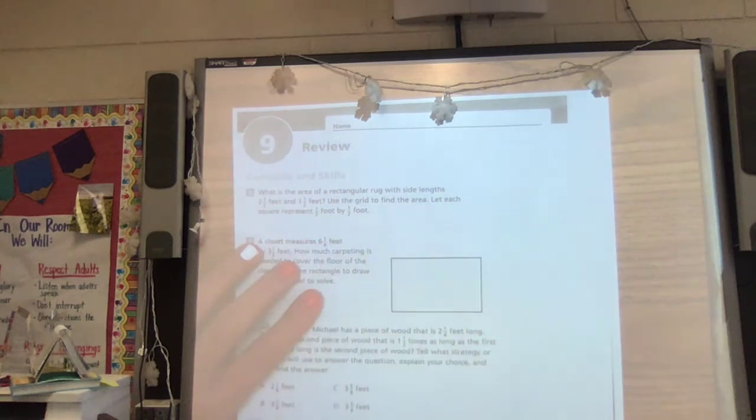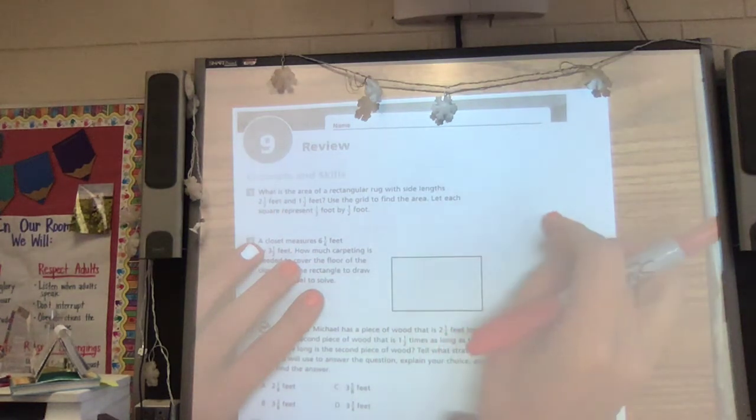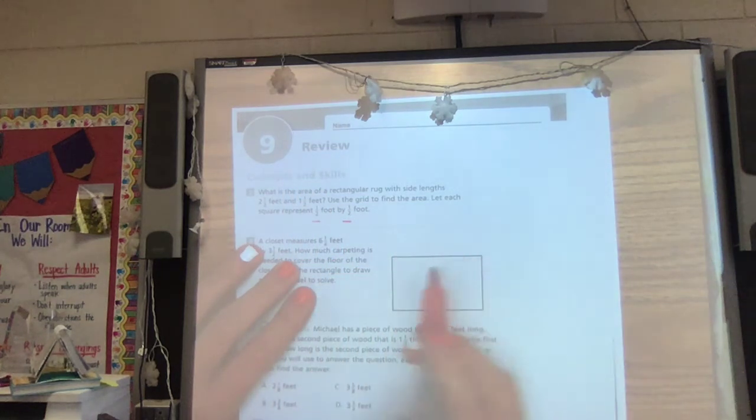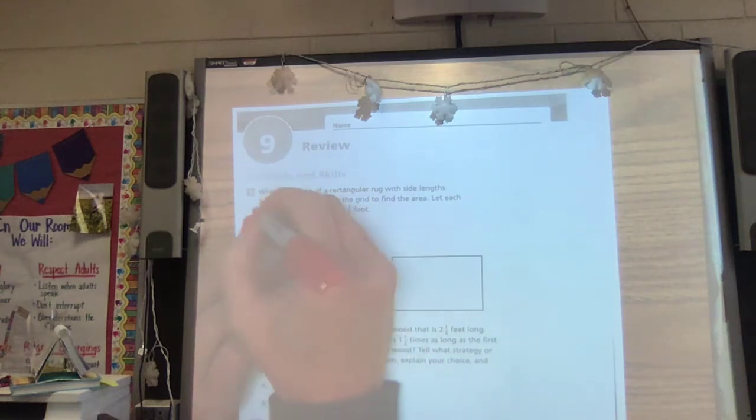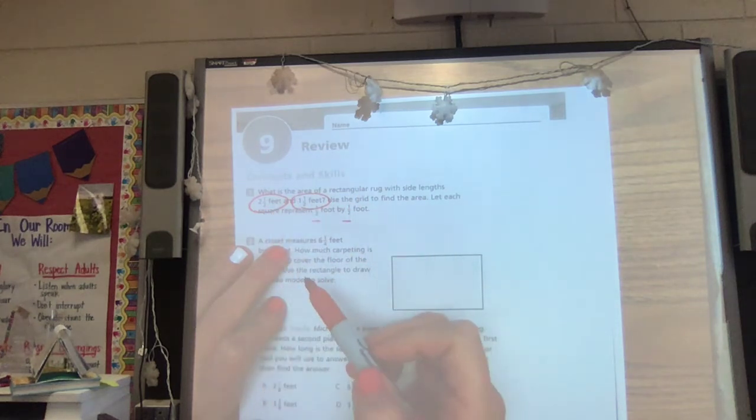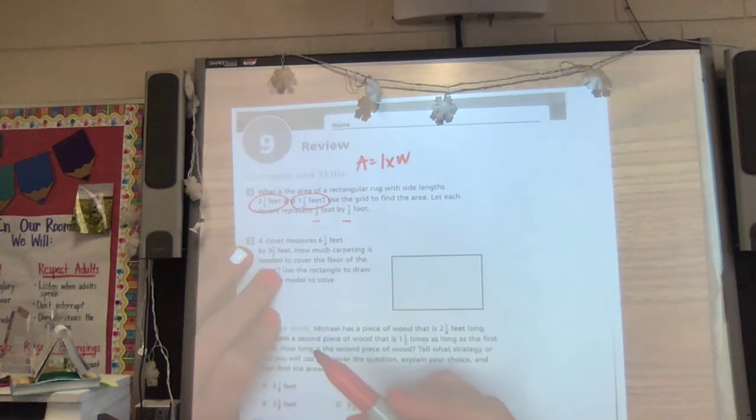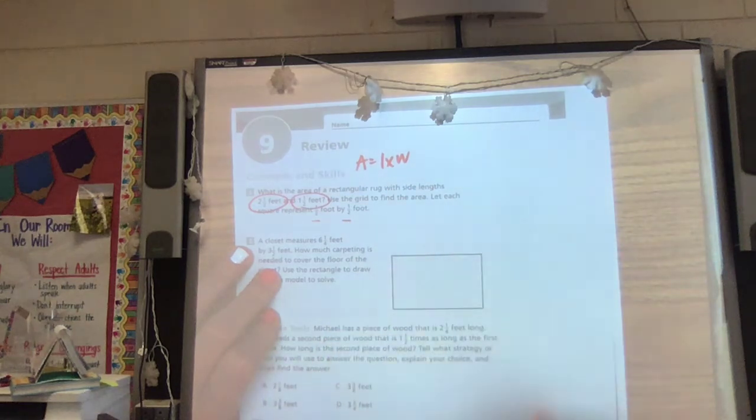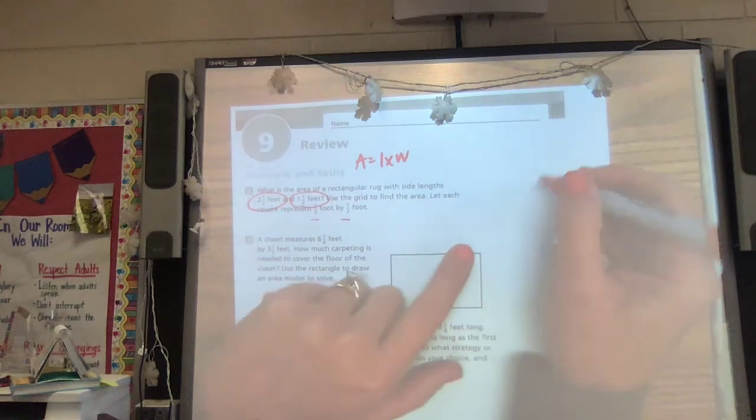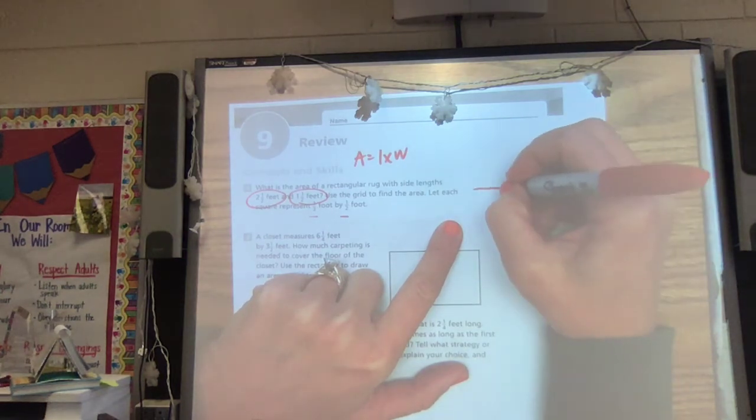What is the area of a rectangular rug with side lengths two and a half feet and one and a half feet? Use this grid to find the area and let each square represent a half a foot by a half a foot. So like we talked about earlier this week, it's important for us to look at what our dimensions are. We know we're finding an area which equals length times width and our dimensions are both in halves. So we need to represent them that way here. And every little square is representing a half a foot by a half a foot. So if I'm going to do two and a half, then I've got a half and a half, which is a whole, a half, a half, which is a whole, and another half.